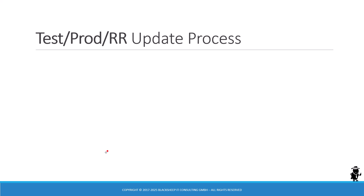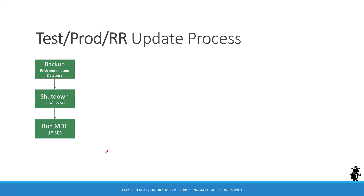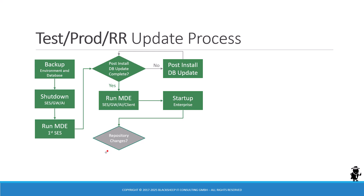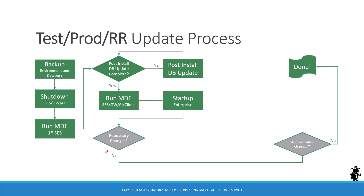Now let's move forward to test, production, or runtime repository environments. The process is quite similar, so the repeated steps won't be covered again. You have to ensure the post-install database update runs on the environment, then run the update on any other Siebel installation in that environment, and start up your enterprise. The short path is if you have no repository changes and no administrative changes — you would be done.